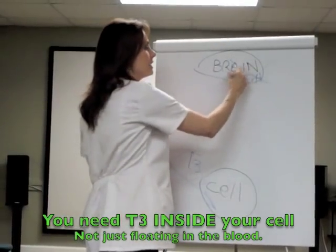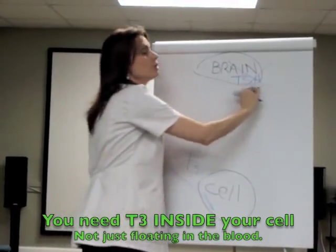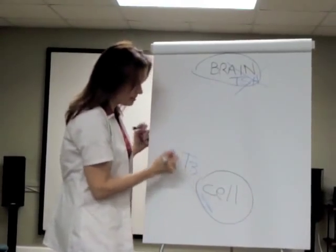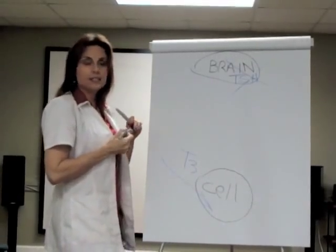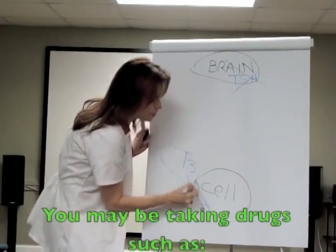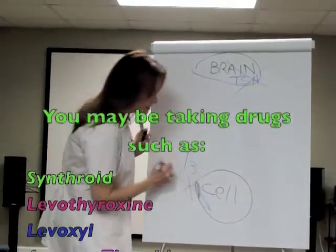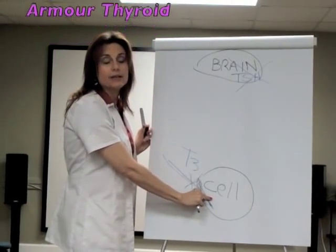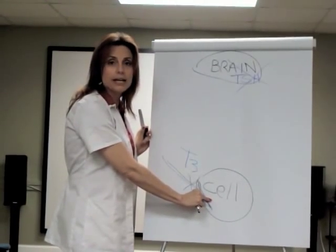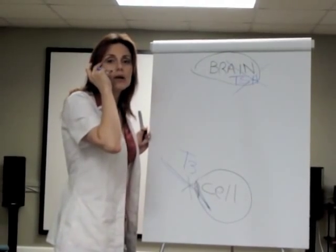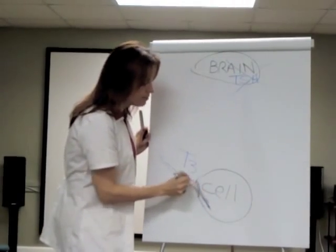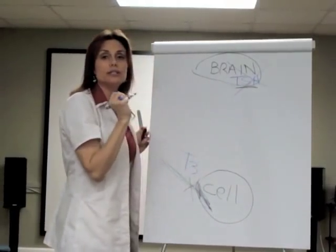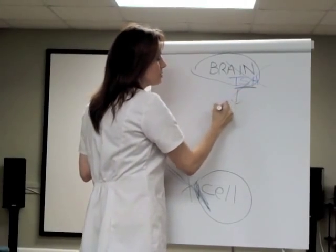TSH is a brain hormone and it can be perfectly normal in a person who is clinically hypothyroid, because T3 cannot get into the cells — it doesn't get through the cell receptor doorway. Some people are hypothyroid: they're holding on to weight, losing their hair, feeling depressed, losing the outer part of their eyebrows — all because T3 can't get into the cell, even though their TSH is perfectly normal.